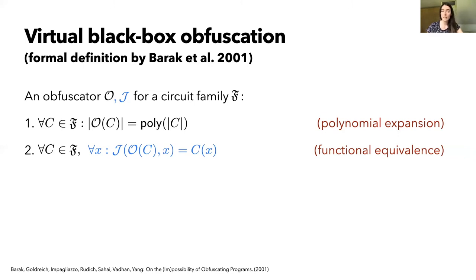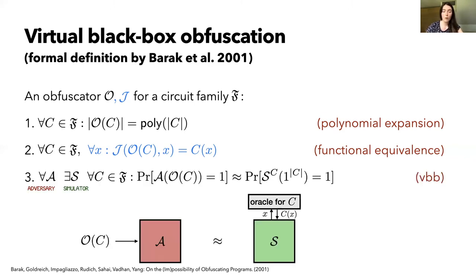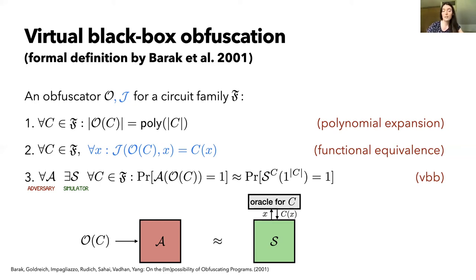Third, for security we use the virtual black box property, or VBB, which says that any efficient adversary that receives an obfuscation of C — O of C — and outputs a single bit can be simulated by an efficient simulator that does not get the obfuscation at all, only the size of the circuit, but has oracle access to the functionality of the circuit. So essentially anything you can learn about the circuit from the object O of C can also be learned from querying the oracle for C a polynomial number of times. If O of C is a quantum state, then the adversary and simulator are also considered to be quantum algorithms, and the simulator still interacts with a classical oracle because the functionality of C is still classical, but it can query it in superposition.